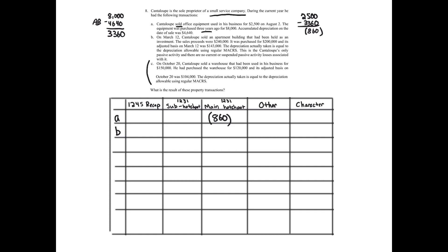B, on March 12th, Cantaloupe sold an apartment building that has been held as an investment. So we saw in a previous problem, there was an apartment building that was held as a business activity. This is an investment activity. Got to be careful. If I tell you it's an investment, it's an investment. If I tell you it's a business, it's business. Same with CPA exam, same with law school exams, same with whatever professor you're out there. Alright.